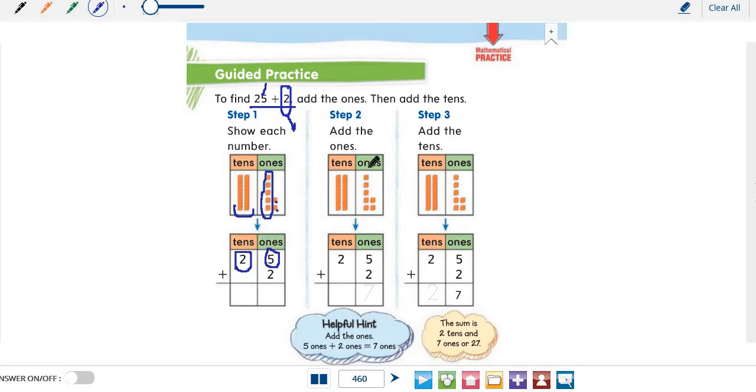The next step is to add ones. Always, we have to start adding with ones. So here we have 5 plus 2, or 5 plus 2 equals 7. The last step is to add tens. Now we have 5 plus 2 equals 7. And then, 2 tens. We have only 2 tens. 2 plus nothing equals 2. So the sum is 27.